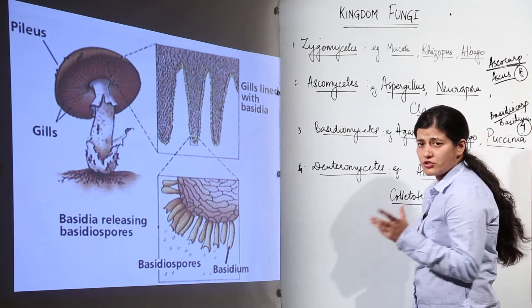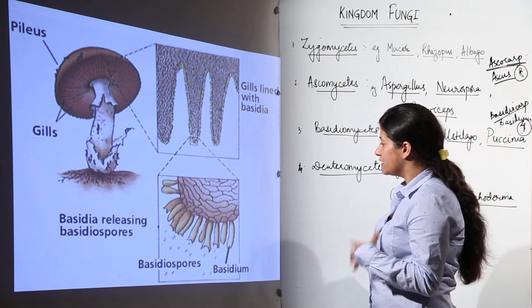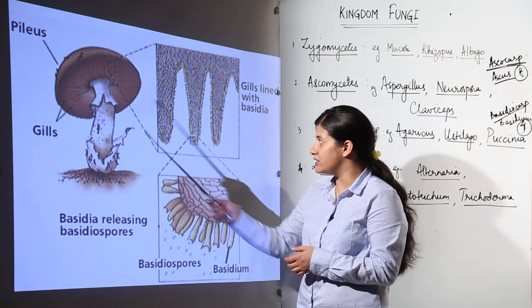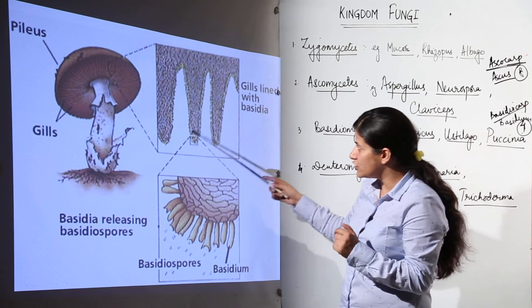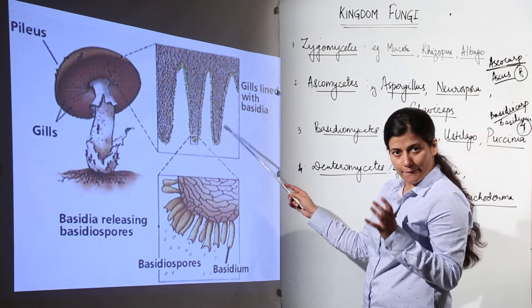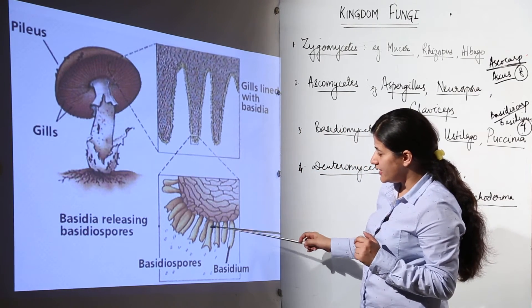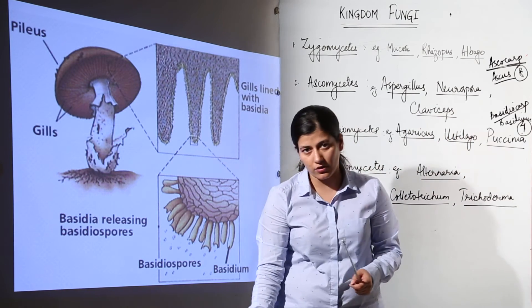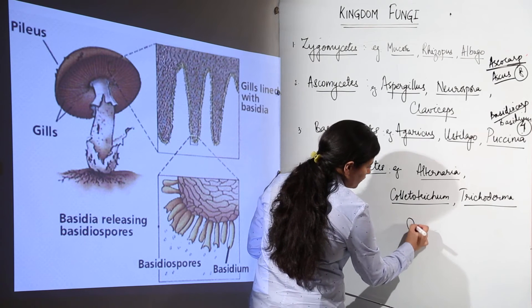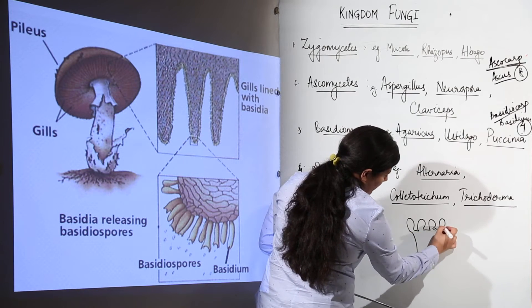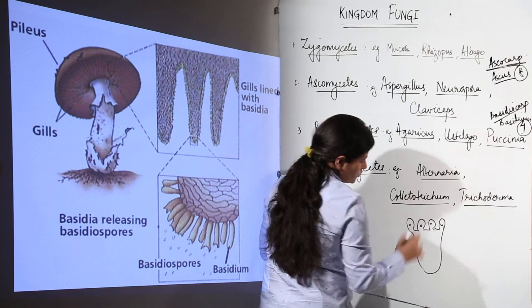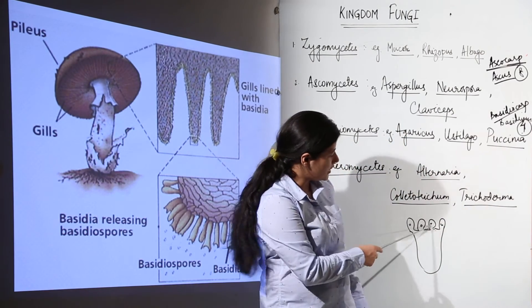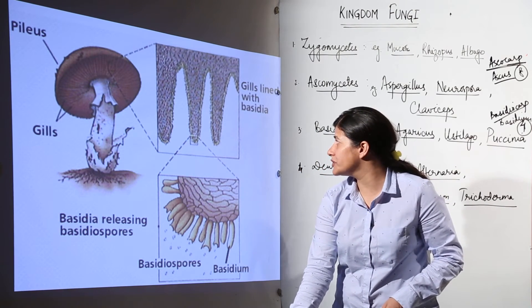Let's see where the basidium is located in an actual mushroom. The cap of the fungi, known as pileus, has gills underneath. Inside each gill, at its periphery, are basidia. This is the basidiocarp containing basidia, and these basidia will have basidiospores. The basidium looks somewhat like bowling pins, and the basidiospores are arranged on it. In the basidio cup there are many basidia, each containing four basidiospores.